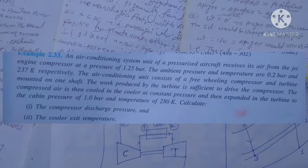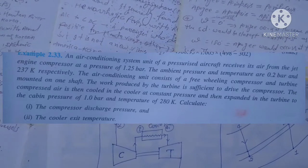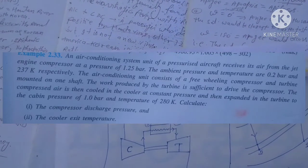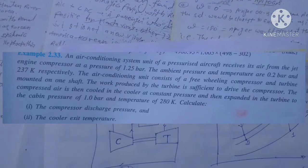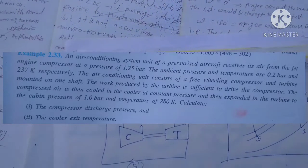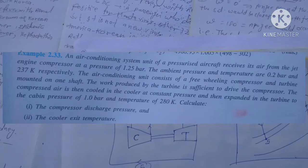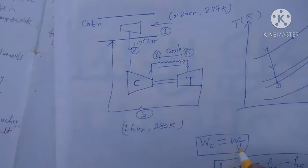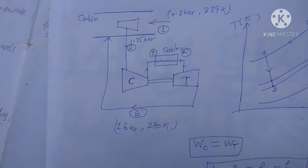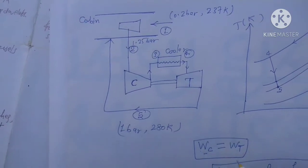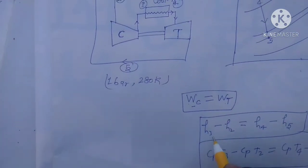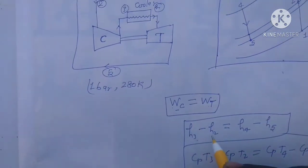The air conditioning unit consists of a free-wheeling compressor and turbine mounted on one shaft. The work produced by the turbine is just sufficient to drive the compressor, meaning work of compressor equals work of turbine. So enthalpy at state 3 minus state 2 equals state 4 minus state 5.